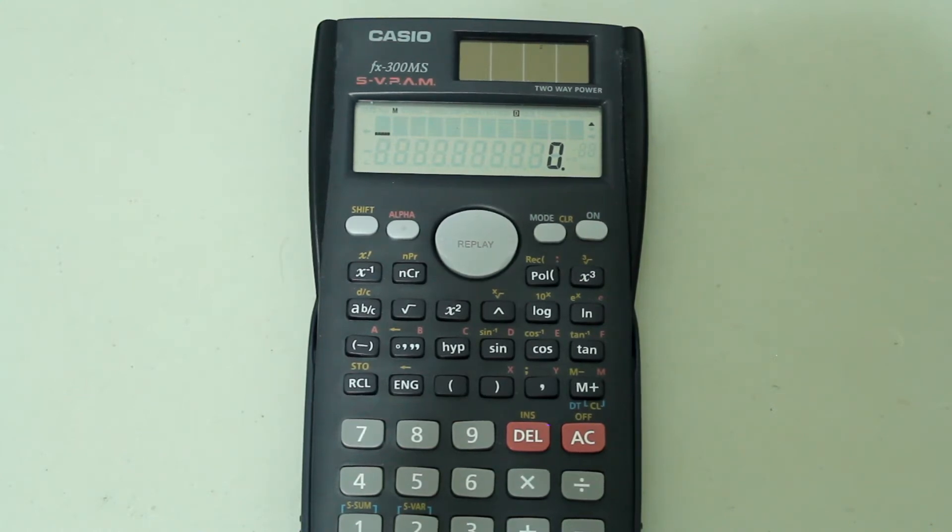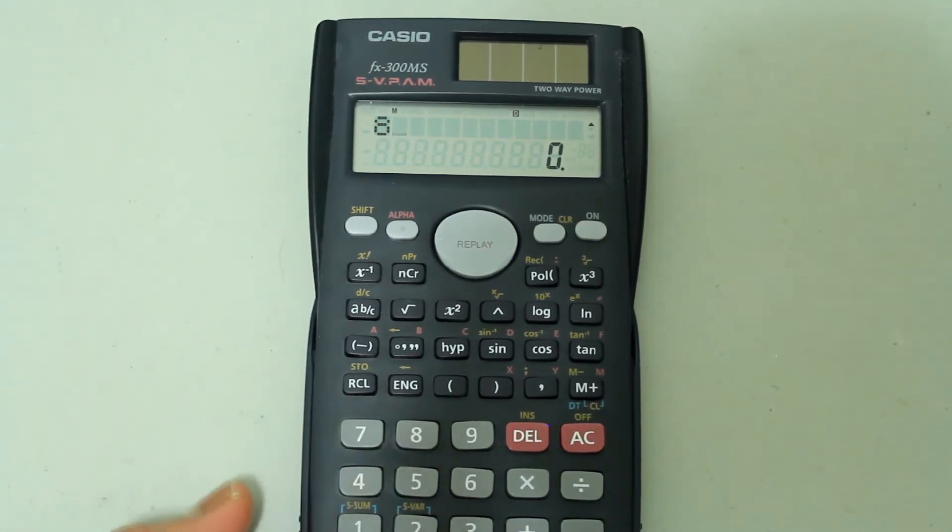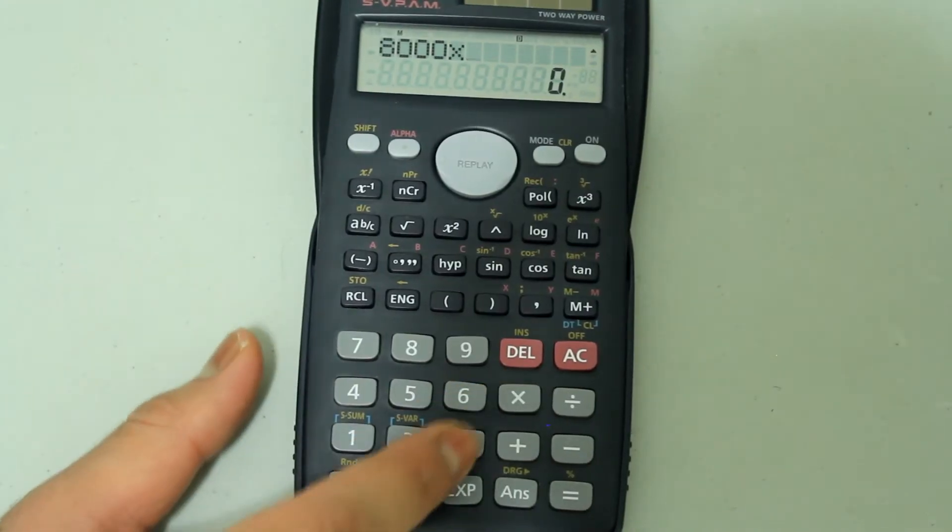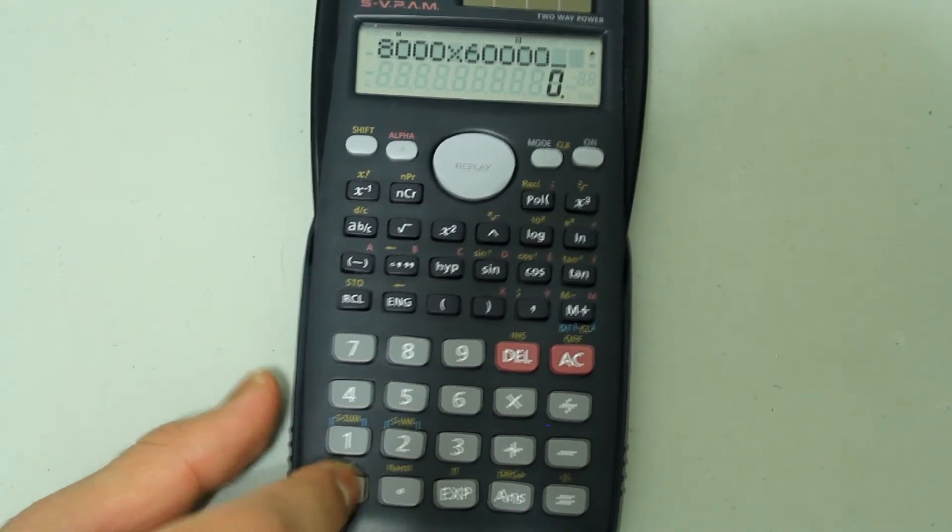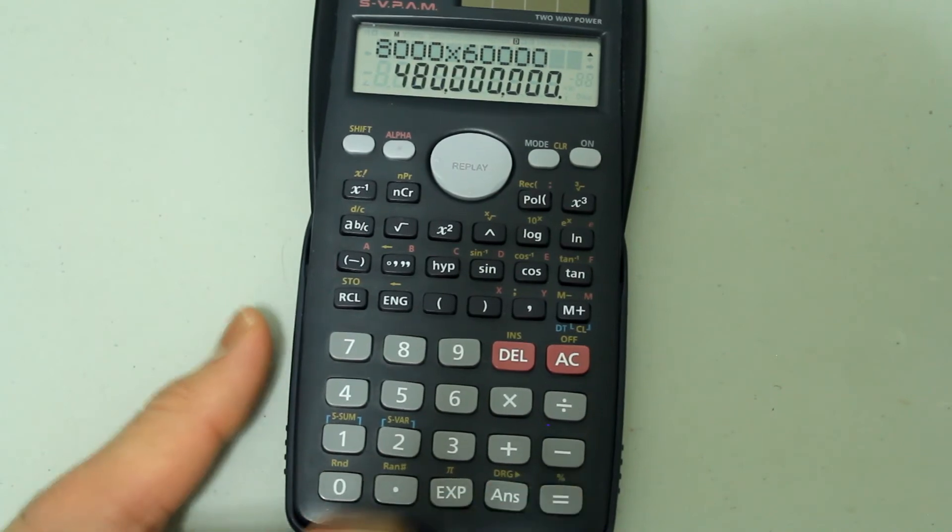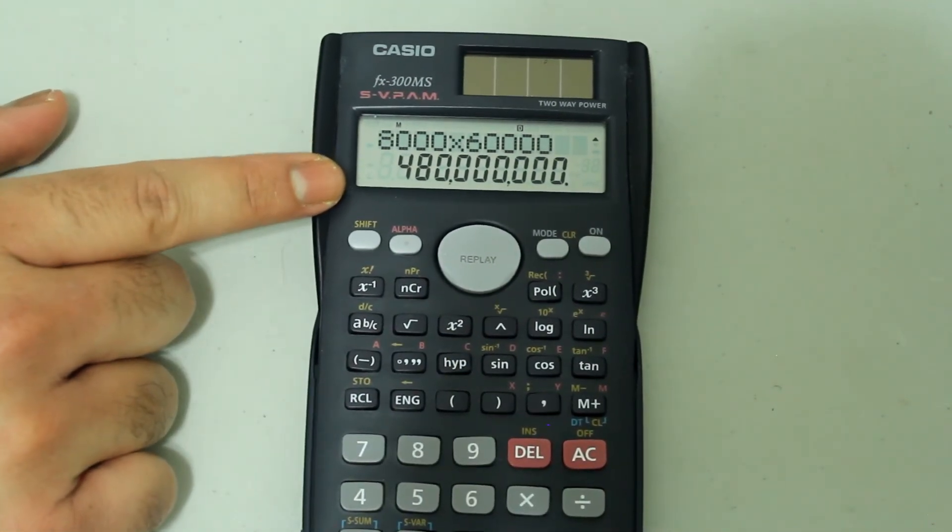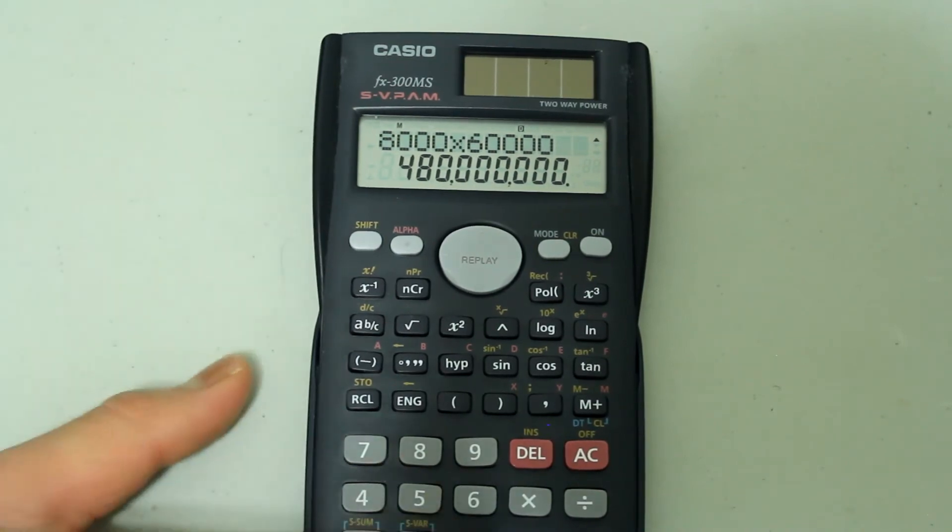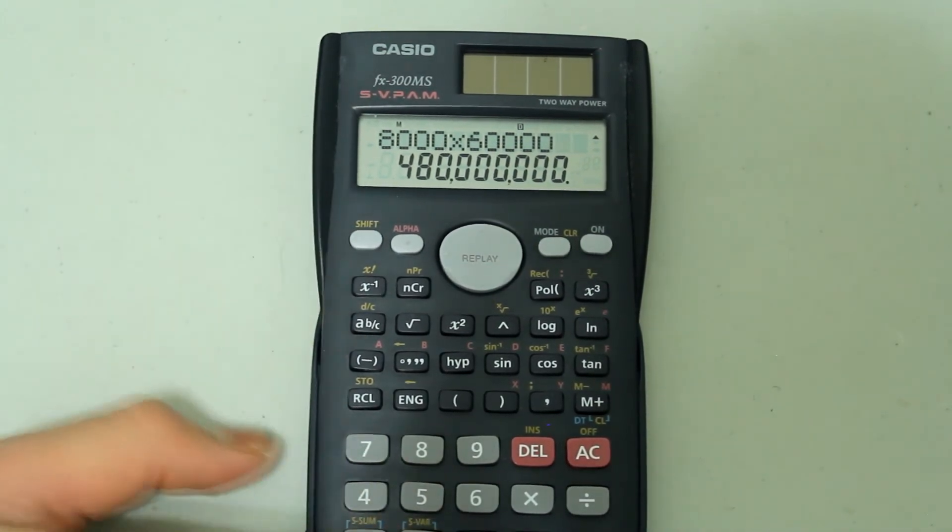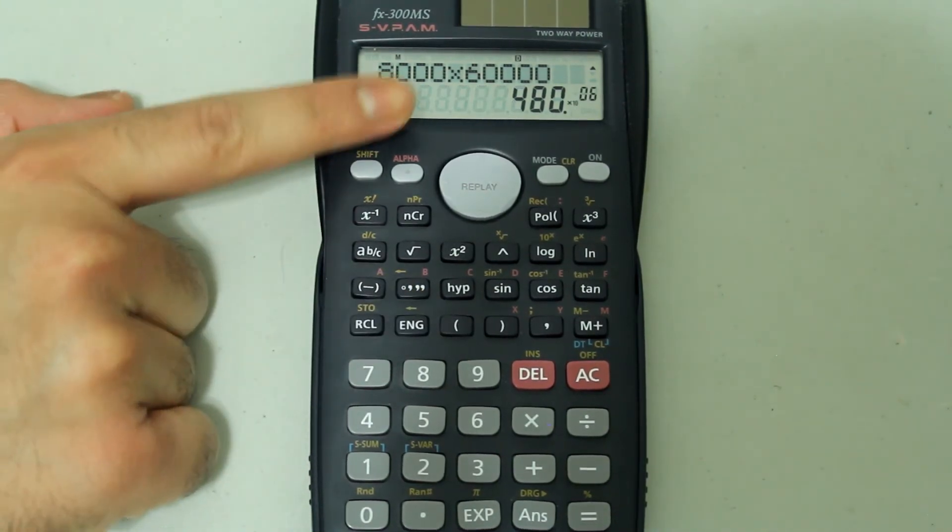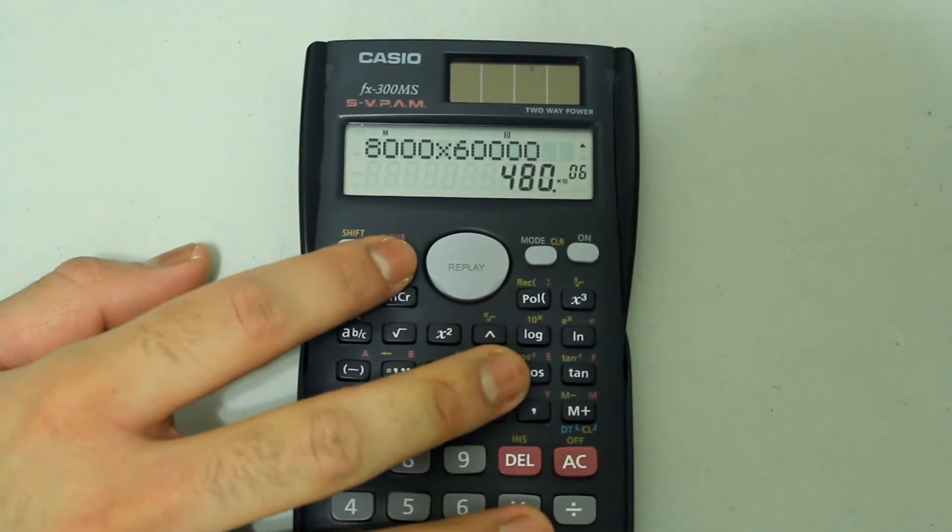So if I type in, for example, 8,000 times 60,000 and press equals, the expanded answer is quite long. So if I want this in engineering notation, all I have to do is press this ENG button.